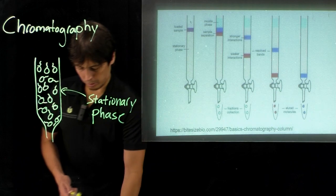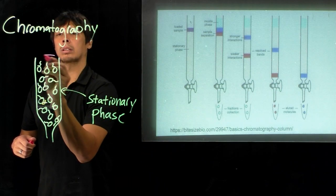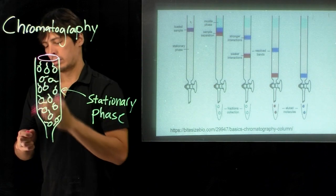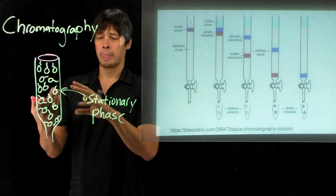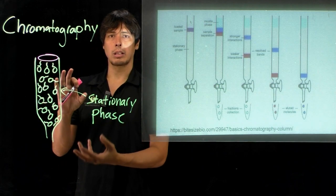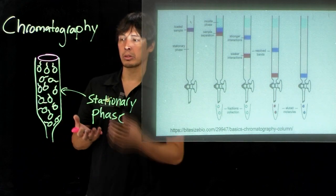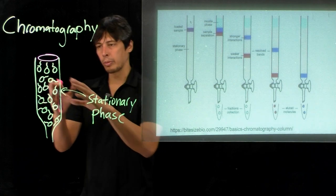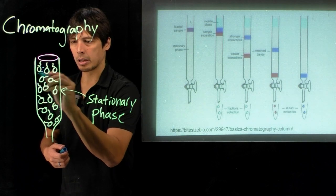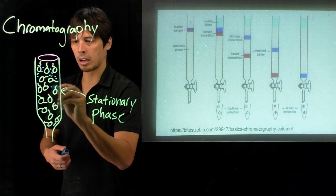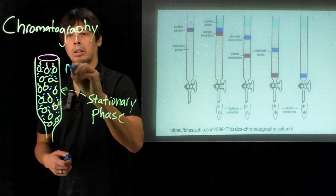We can load our protein or cell lysate onto this and pass it through. The stationary phase is in some sort of solution, basically a very concentrated suspension. Running through in between all these beads is generally some sort of water-based solution. That's called the mobile phase.